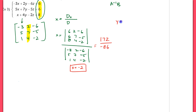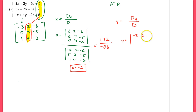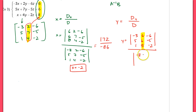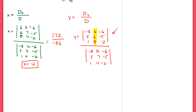For Dy, we replace the second column with the constants. So my new matrix is: negative 3, 6, negative 6; 5, 6, negative 5; 1, 8, negative 2. Divide that by the original coefficient matrix — we already know the denominator is negative 86, so just edit that column in your calculator and find the new determinant.